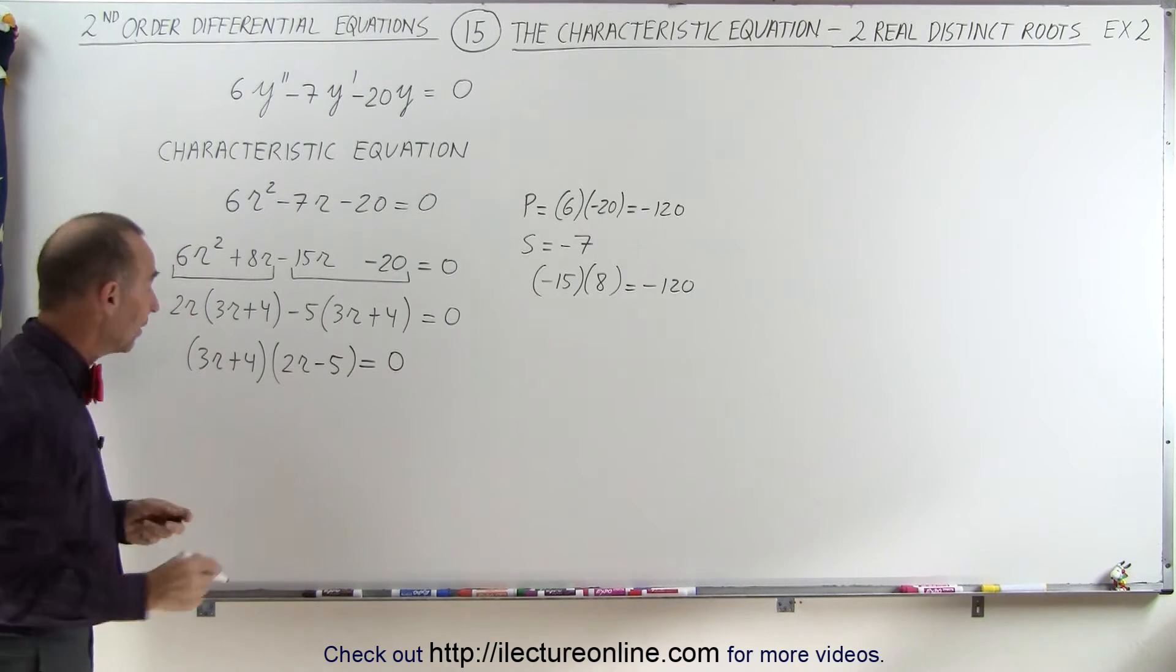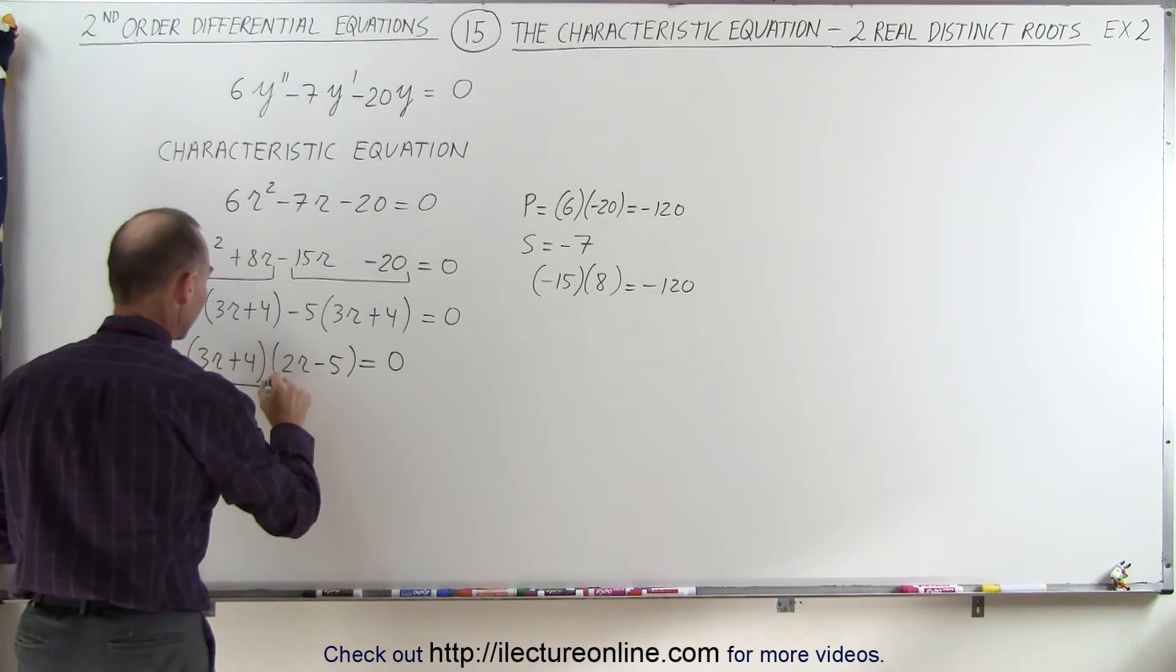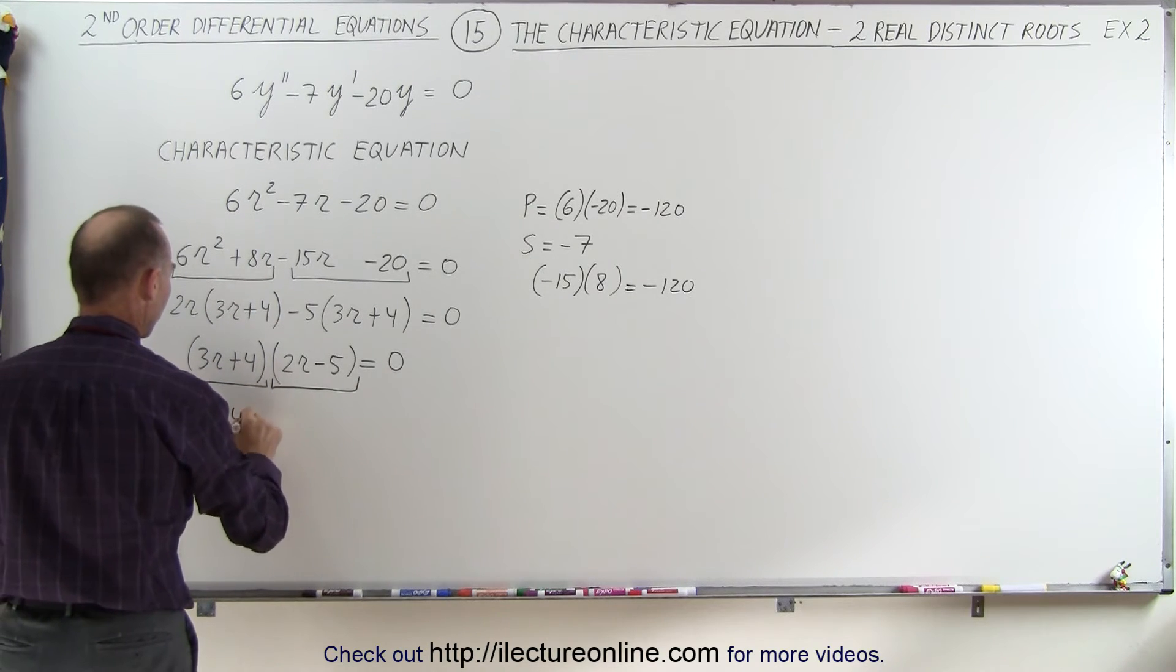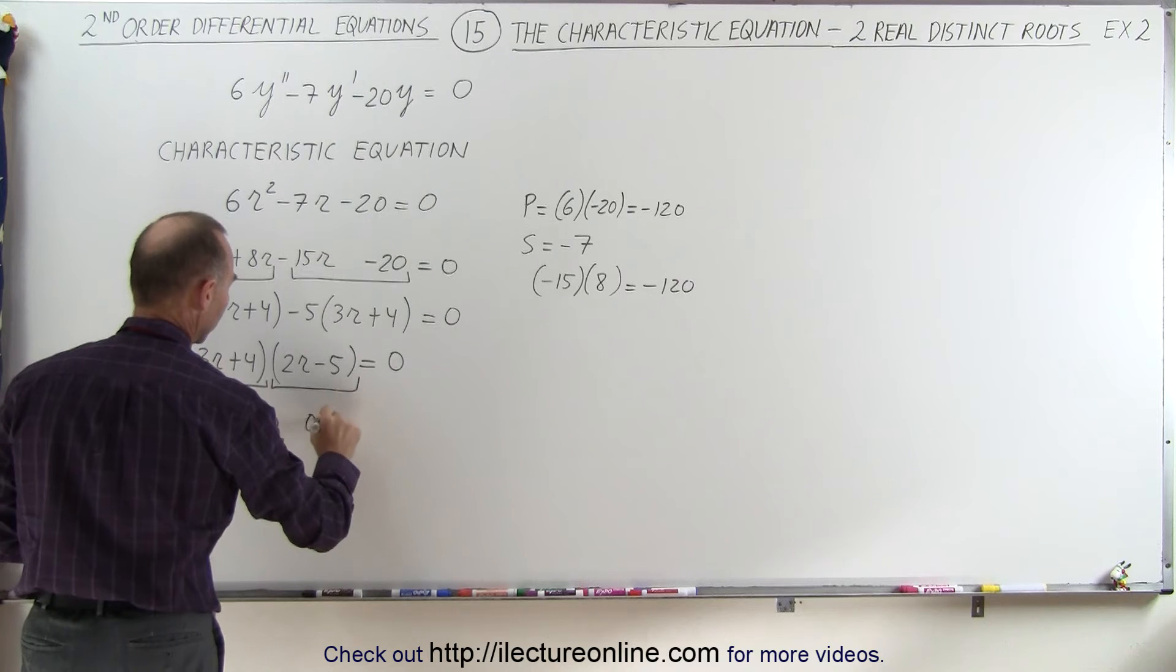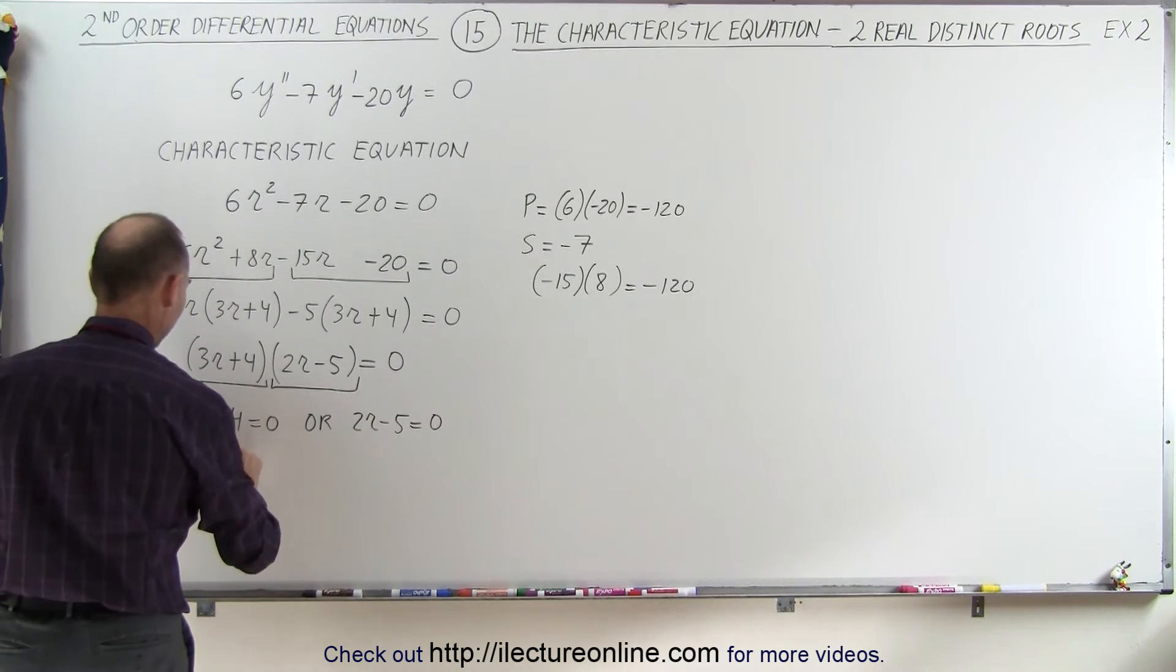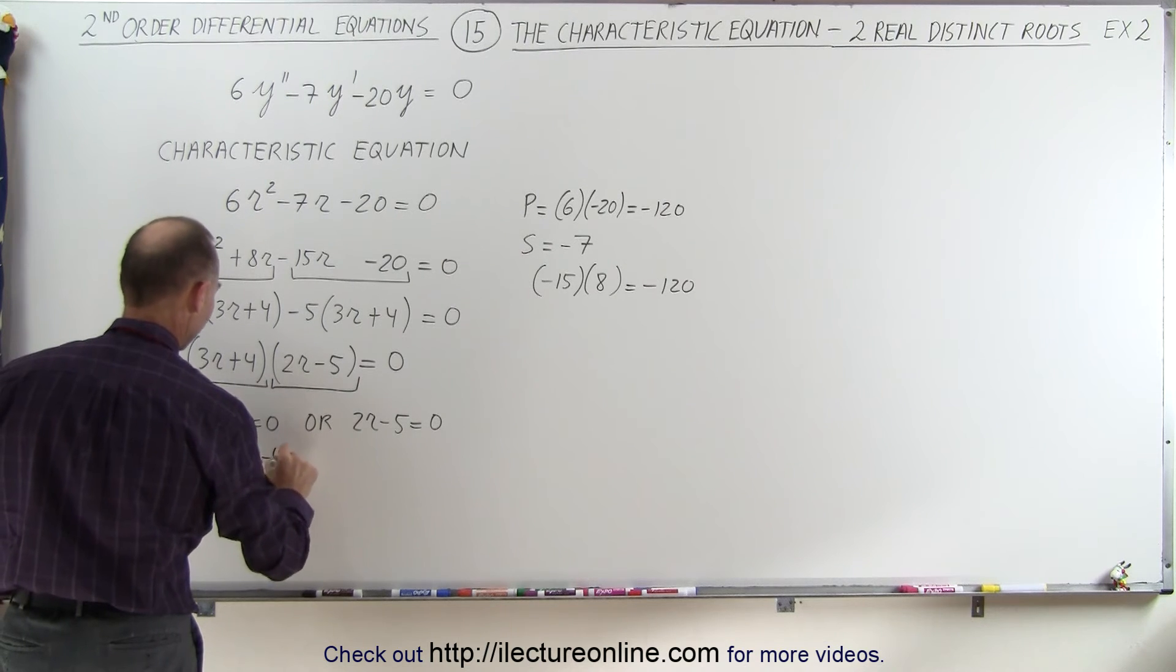Now we have a product of two things multiplied together, giving us 0. This means that 3r + 4 must equal 0, or 2r - 5 must equal 0. In the first case, we have 3r = -4.